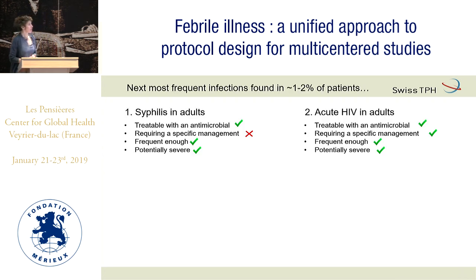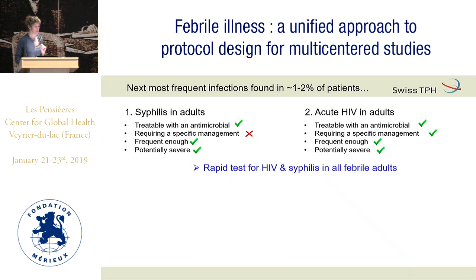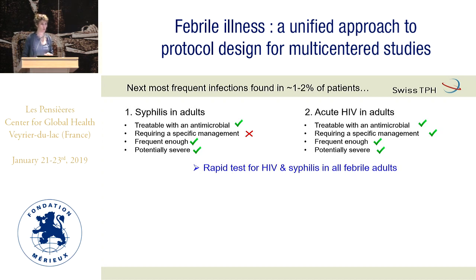Then we enter infections that are much less prevalent, between 1 and 2%. The next two most frequent in adults were syphilis and acute HIV seroconversion — and they have a lot of criteria for testing. I would say all febrile adults should be tested for HIV. This is obvious. And probably also for syphilis. We have very good rapid tests — why not use them much more?